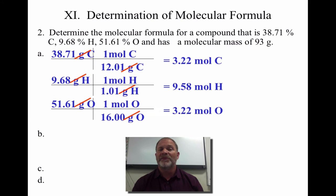Step three, I'm going to divide through my lowest answer, which is 3.22. So I have one carbon, I have three hydrogens, and I have one oxygen. So my empirical formula is CH3O.